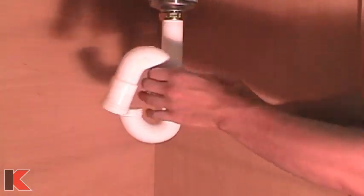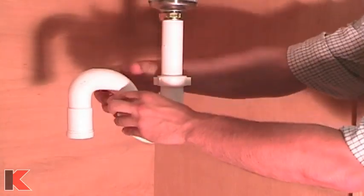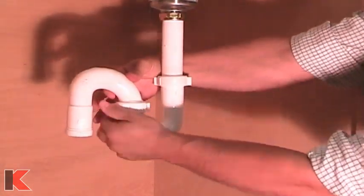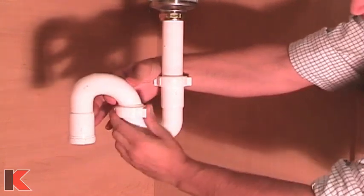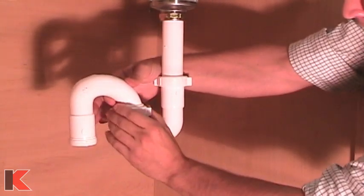Attach the J-bend with the captured nut to the J-bend just attached to the tailpiece. Attach the J-bends low end to low end and hand tighten the captured nut.